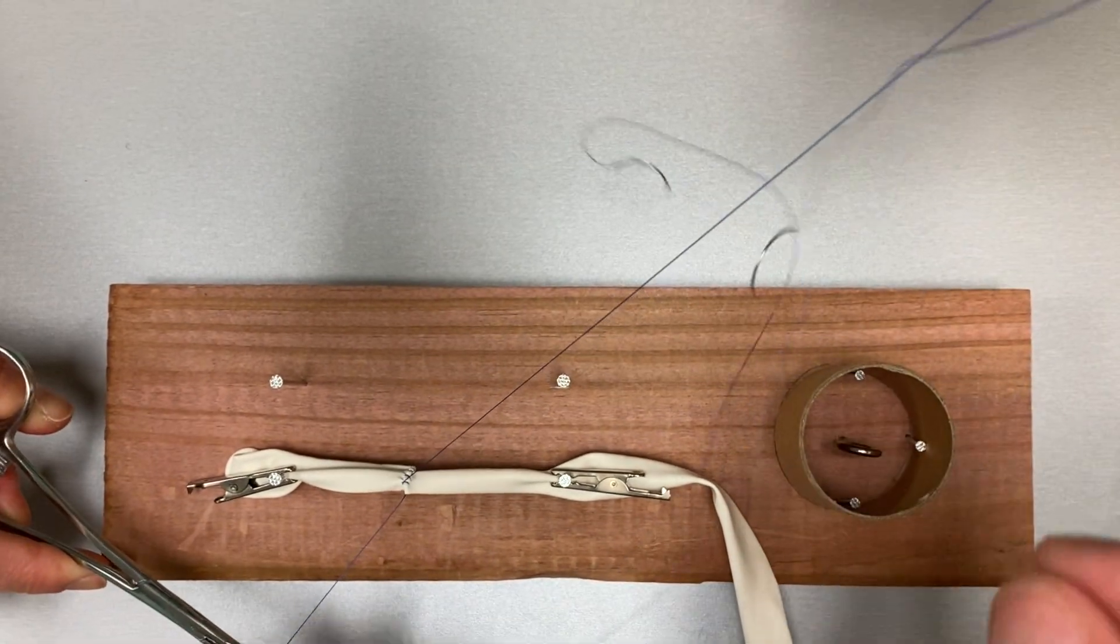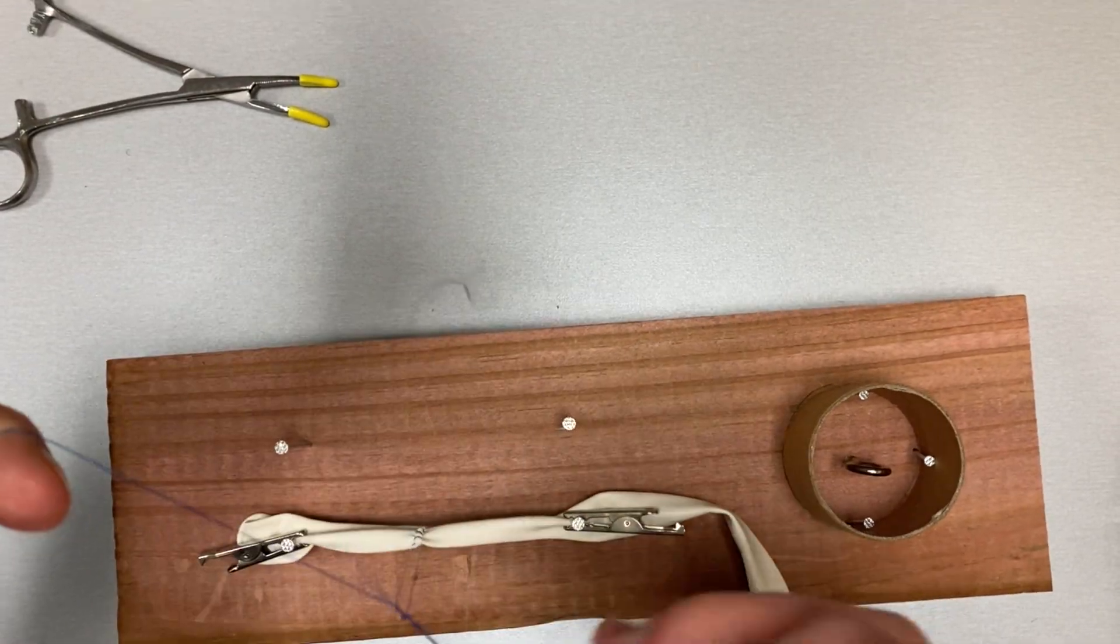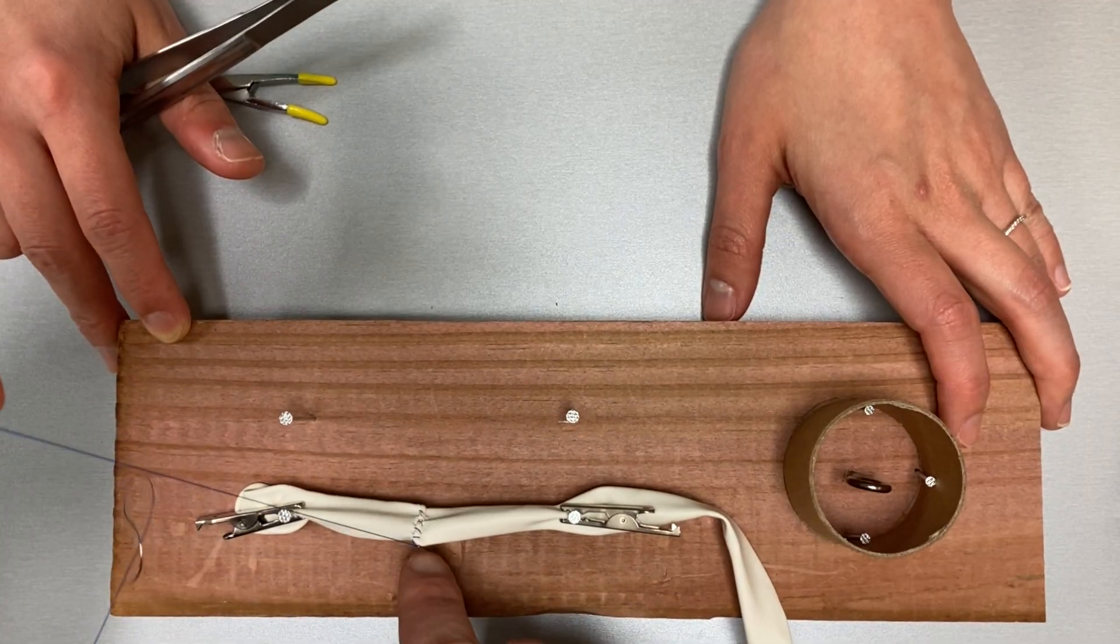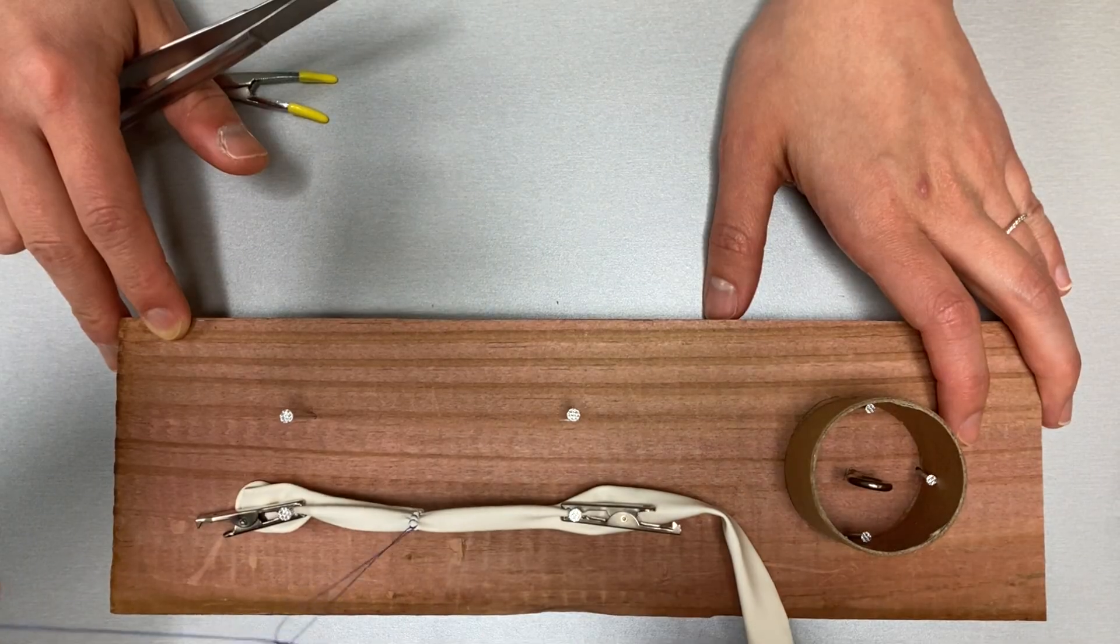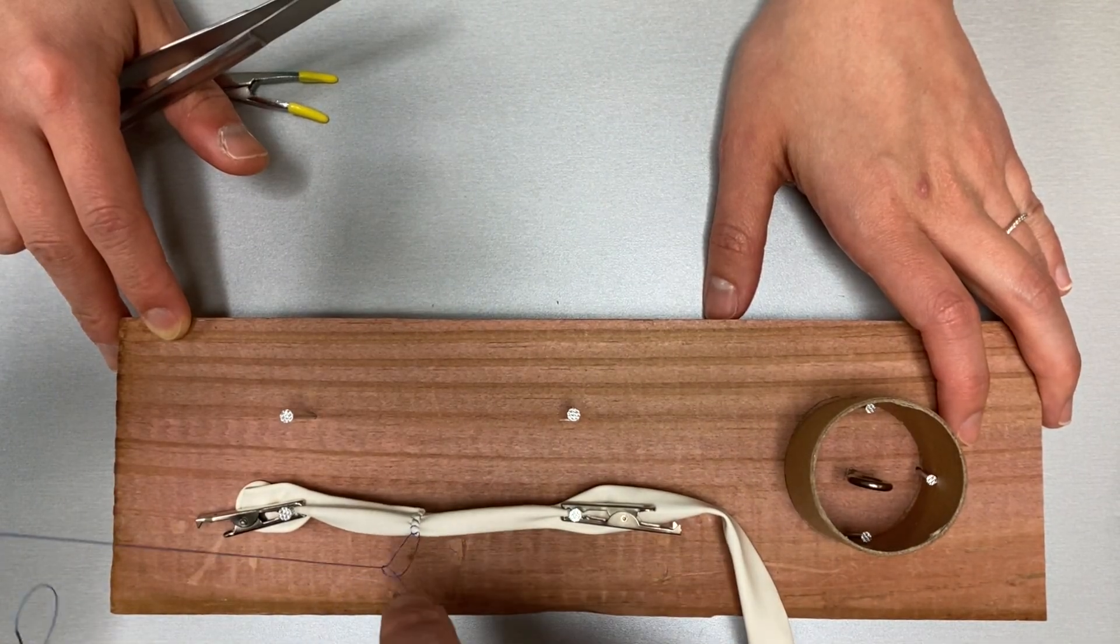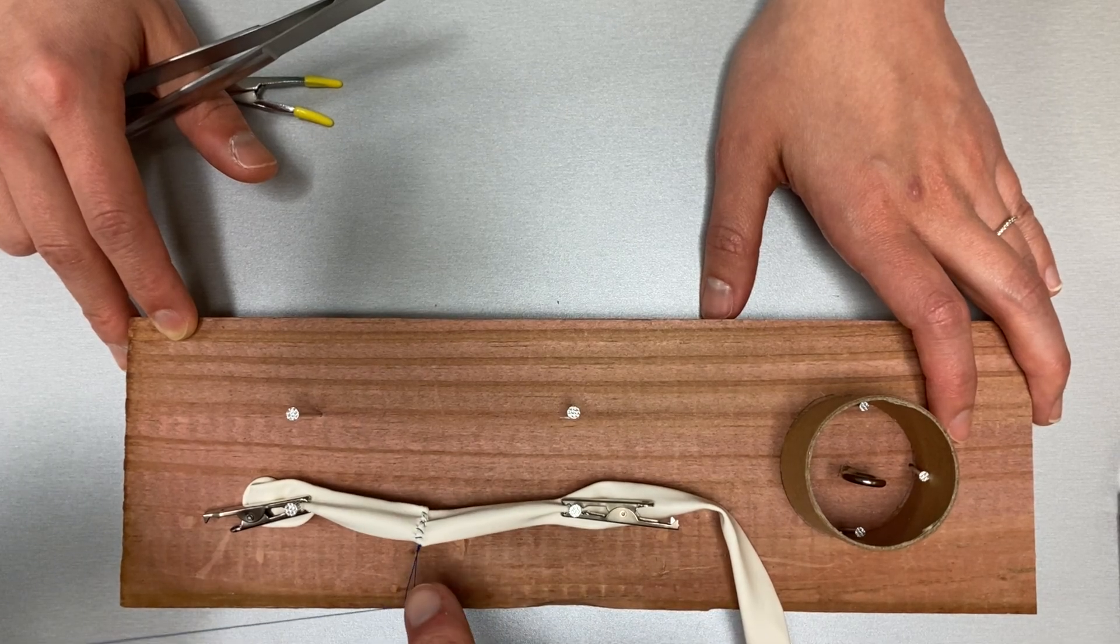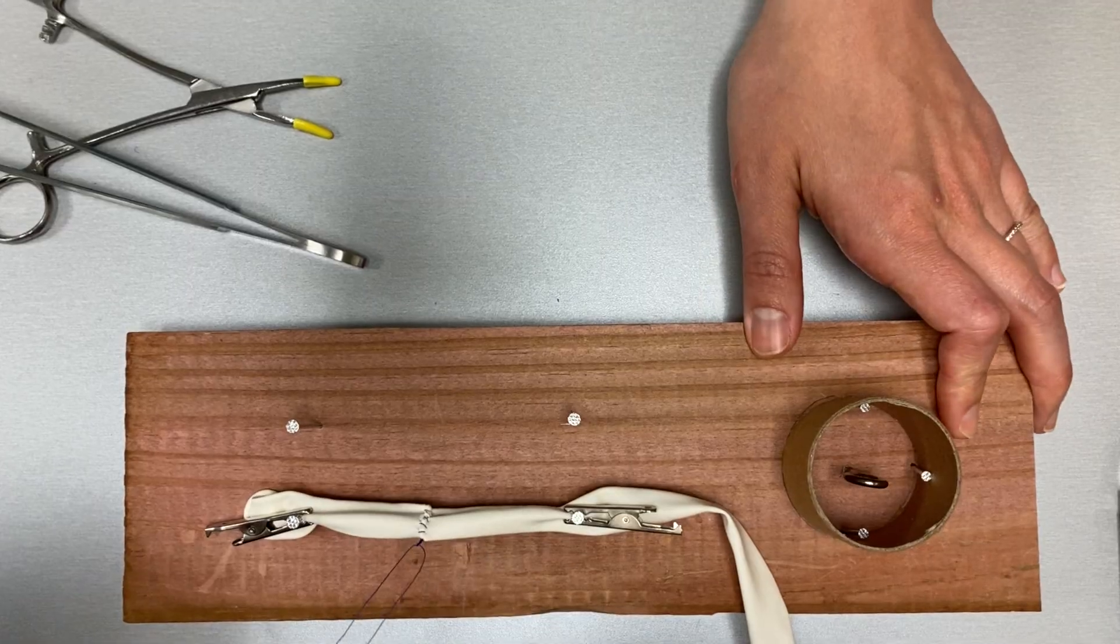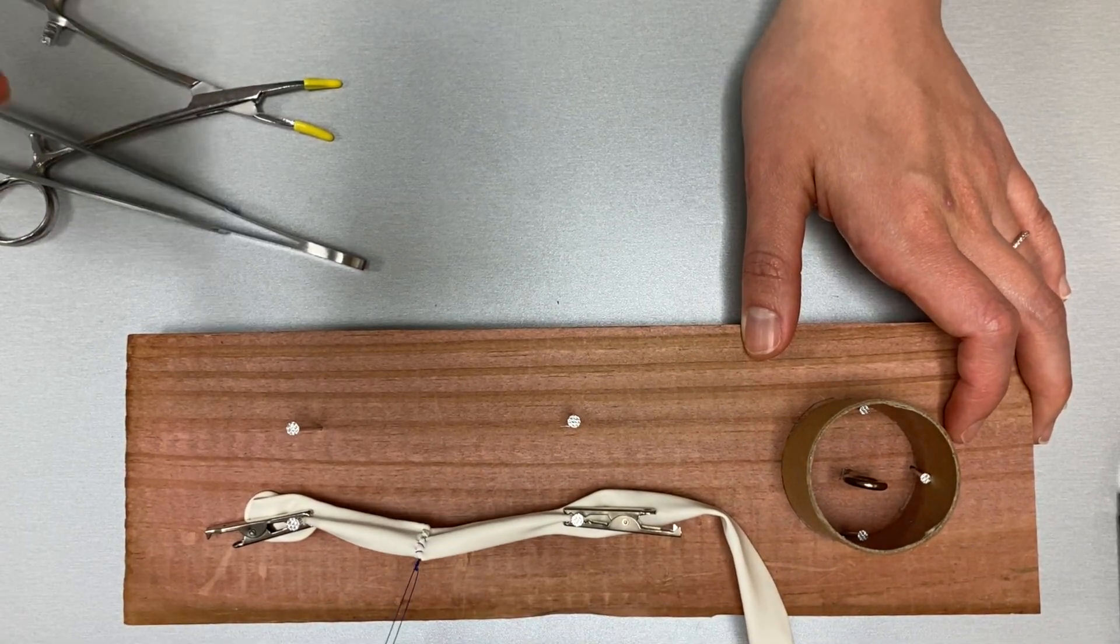After taking your final bite, tie both ends of the suture together using square knots. Cut your suture leaving a tail and your end-to-end vascular anastomosis is complete.